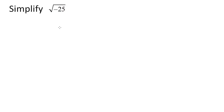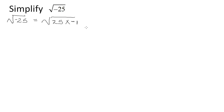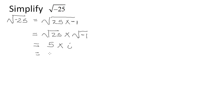Simplify √(−25). We rewrite −25 as 25 × (−1), then apply the third law to separate the roots: √25 × √(−1) = 5 × i = 5i. Therefore √(−25) = 0 + 5i in standard form. The square root of a negative number will always represent the imaginary part.